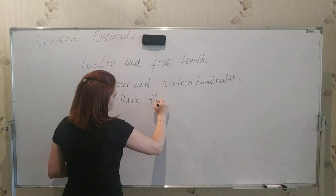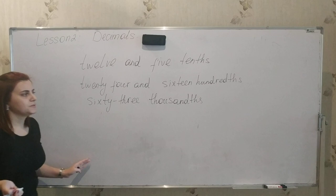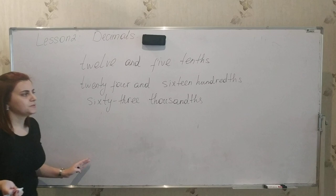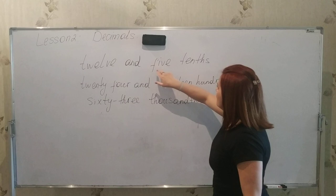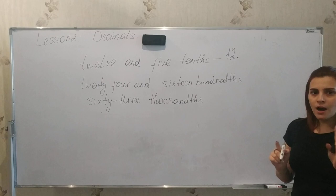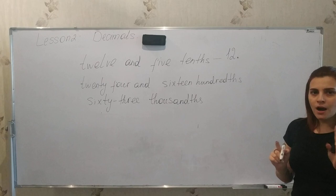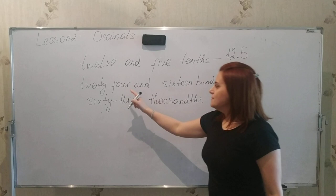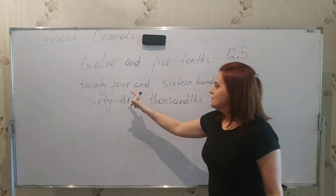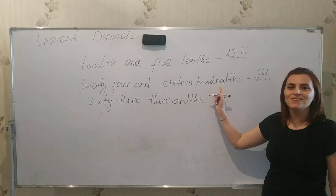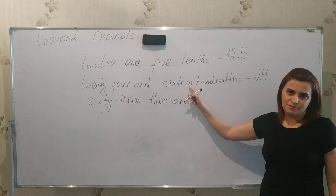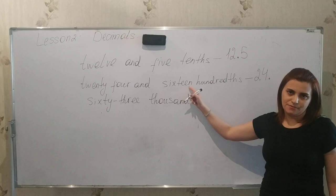And I will also write sixty-three thousandths. Let us start. Twelve and five tenths: twelve is the integer part, so we write twelve point; tenths means one decimal place, and we write five — so twelve point five. Twenty-four and sixteen hundredths: hundredths means two decimal places, we already have two digits — one and six — so twenty-four point one six.